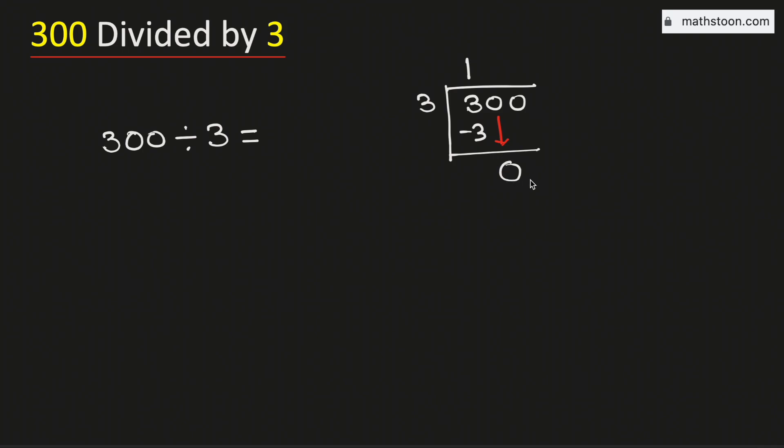But see that this number 0 is less than 3. But as we have brought down this number 0 here, so we need to divide it. From the multiplication table of 3, we know that 3 times 0 is 0. Subtract, we get 0.